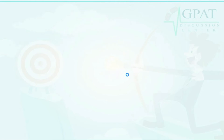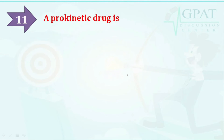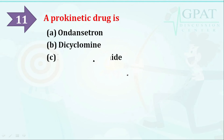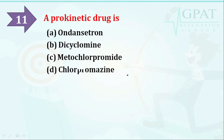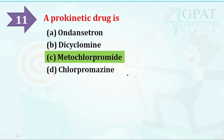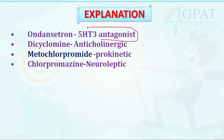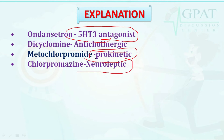The next question: a prokinetic drug is — option A: Ondansetron, option B: Dicyclomine, option C: Metoclopramide, option D: Chlorpromazine. The correct answer is Metoclopramide. Ondansetron is a 5-HT3 antagonist with antiemetic effect; Dicyclomine is anticholinergic; Metoclopramide is prokinetic; and Chlorpromazine is a neuroleptic drug.